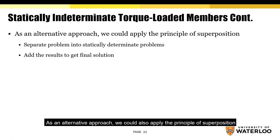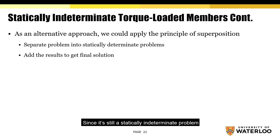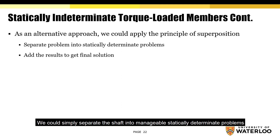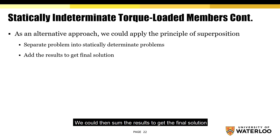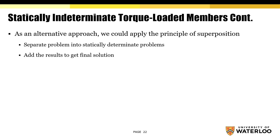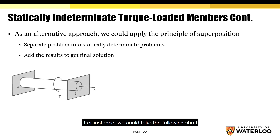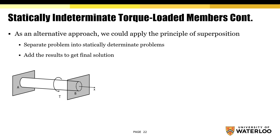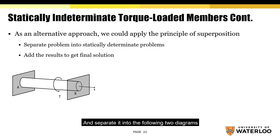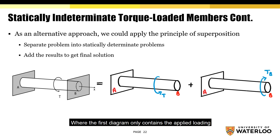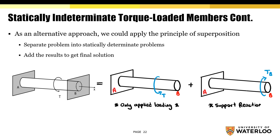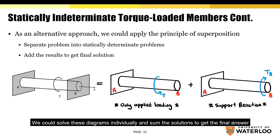As an alternative approach, we could also apply the principle of superposition. Since it's still a statically indeterminate problem, we could simply separate the shaft into manageable statically determinate problems, then sum the results to get the final solution. For instance, we could take the shaft, remove the support at B, and separate it into two diagrams — where the first diagram only contains the applied loading and the second diagram only contains the reaction torque at B. We could solve these diagrams individually and sum the solutions to get the final answer.